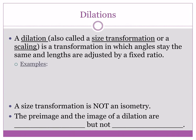Section 13.3. We're going to take a look at something called dilations. Everything we've looked at so far was called an isometry — the whole point being that isometries preserve the size and shape of things; they preserve distances. The other things we're going to look at in this section and 13.4 have nothing to do with preserving those distances. In fact, dilations are exactly the opposite. Dilation is also called a size transformation or a scaling — a transformation in which angles stay the same but lengths are adjusted by a fixed ratio.